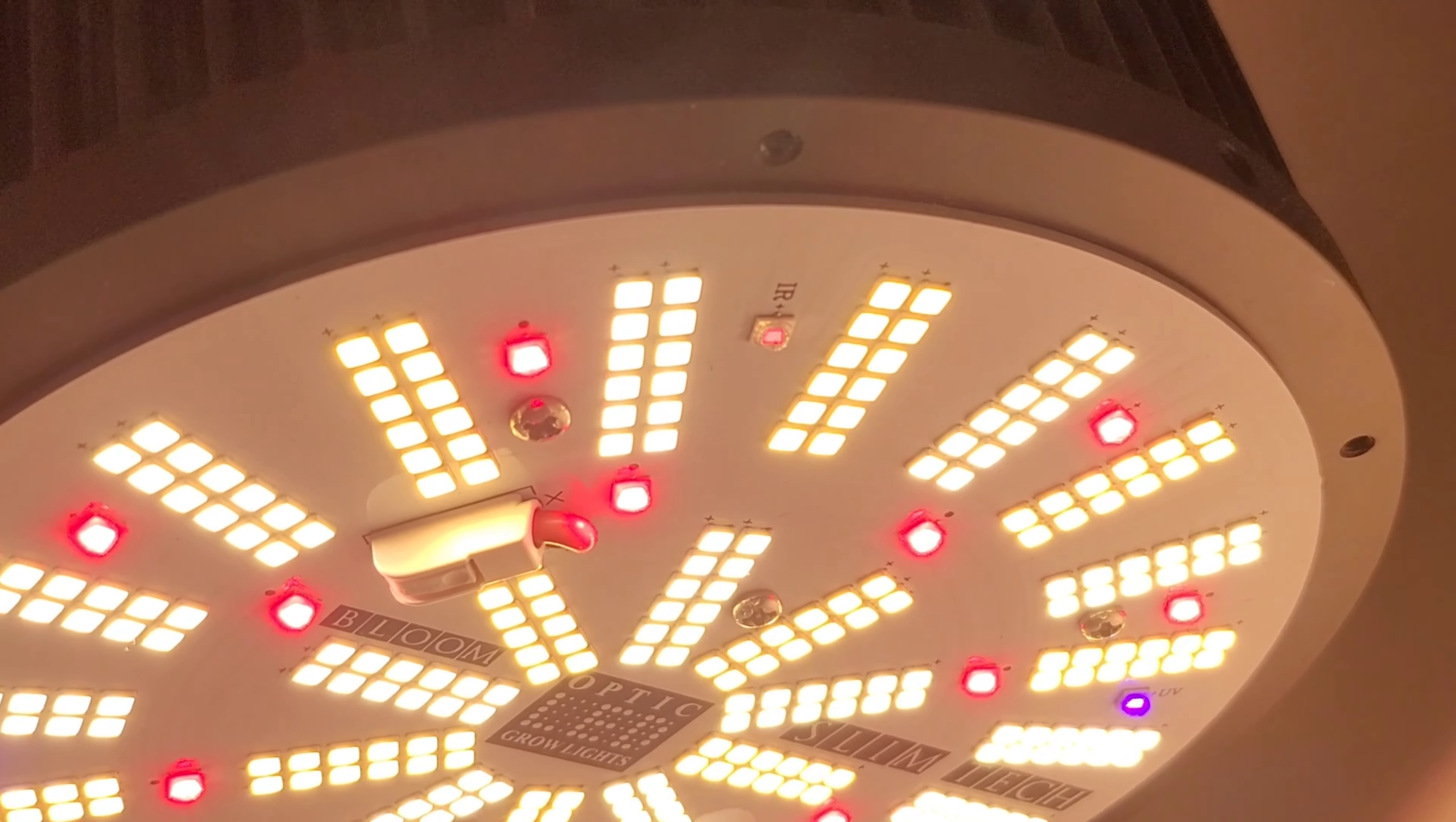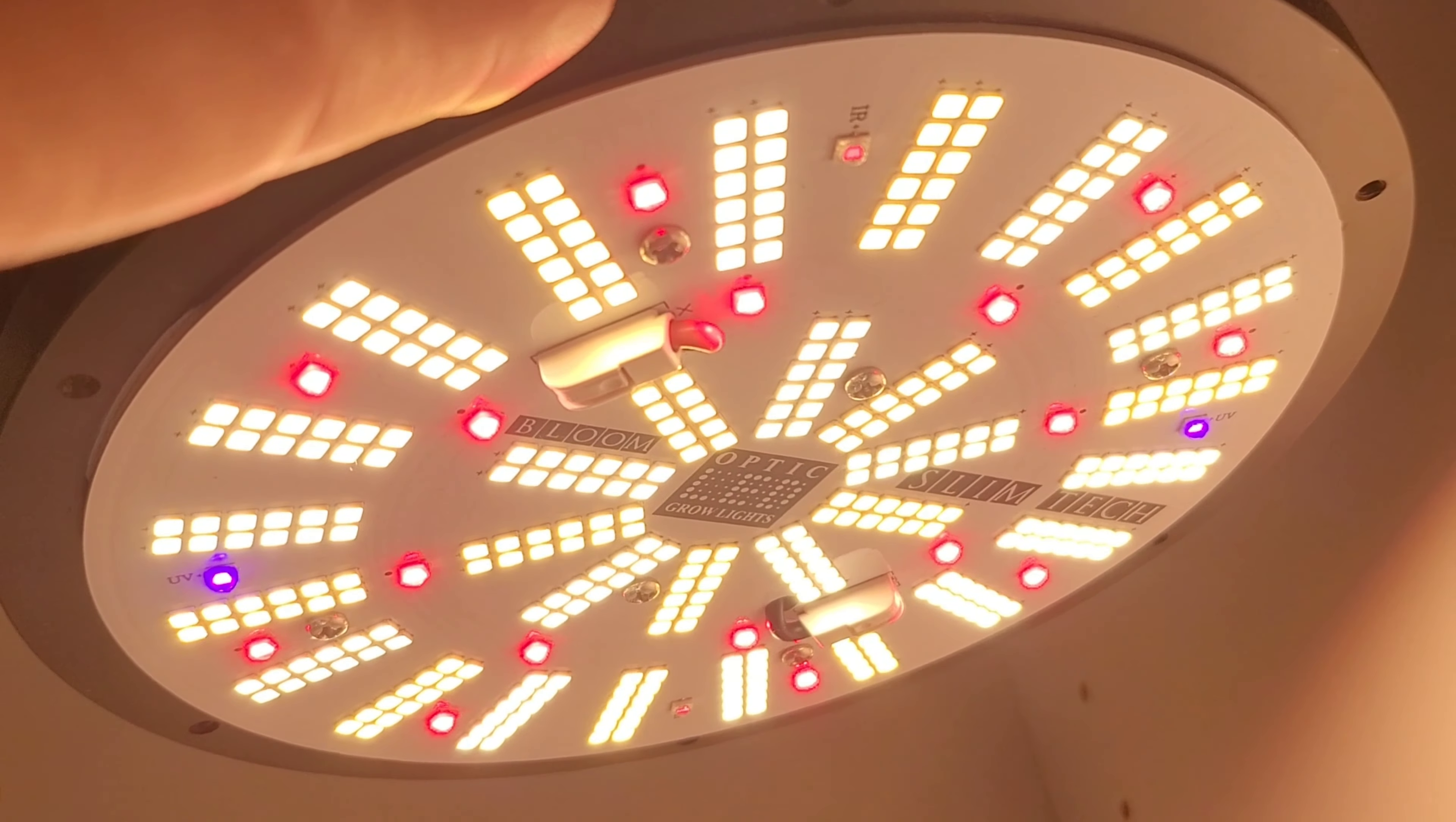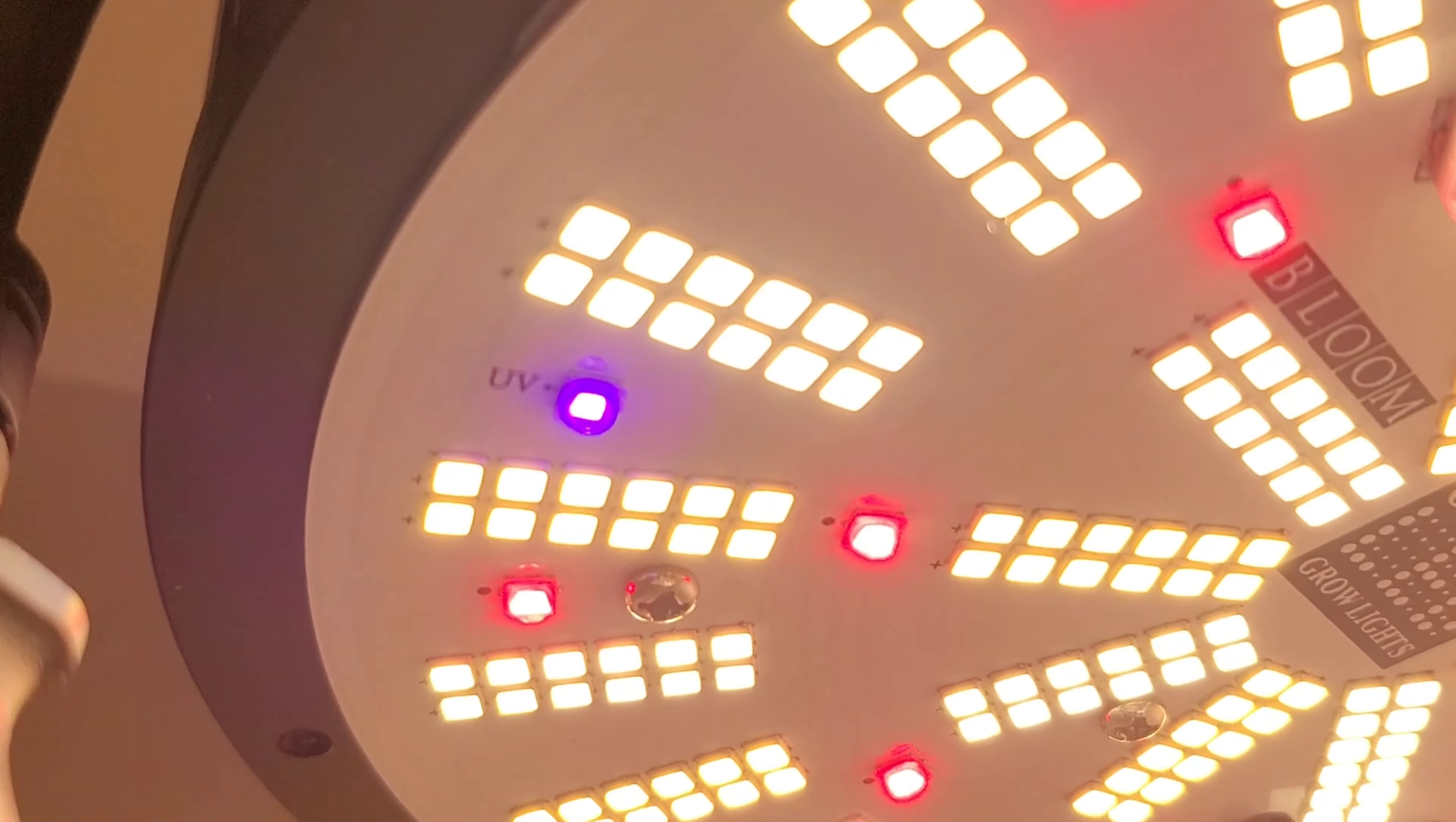First you have two of these purple ultraviolet to stimulate that resin production. And two of these Samsung infrared diodes, horticulture series. So all the diodes on this light are Samsung horticulture series. A lot of other companies are using just the standard, like the B version. These ones have a sulfurization treatment, essentially makes them waterproof. So they're much more resilient to last a lot longer. That's what makes them the horticulture series.